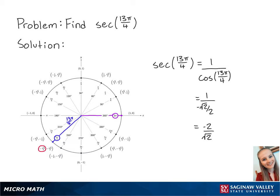We want to rationalize the denominator, so we're going to multiply the top and the bottom by the square root of 2, so that we get negative 2 times the square root of 2 over 2.